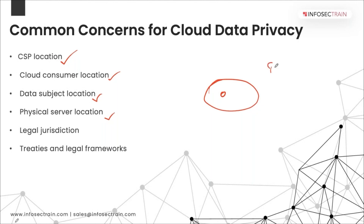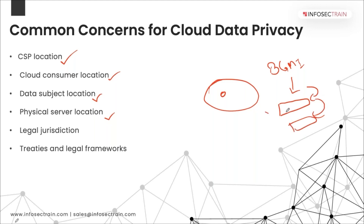For example, BGMI got banned in India — first it was PUBG, then it became BGMI, and then BGMI also got banned. This was because data was being sent to and picked up from servers in China, so the data was stored in China. Physical location plays an important role because it dictates the legal jurisdiction — what country, state, or region has the right to hear a case concerning a legal matter tied to data privacy.